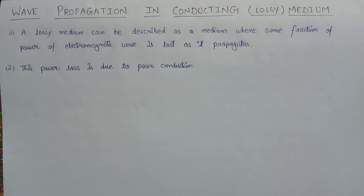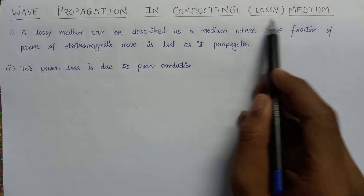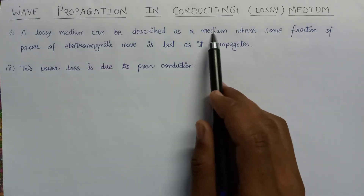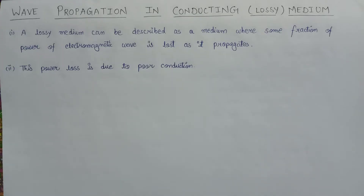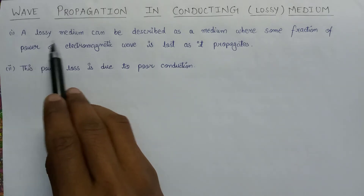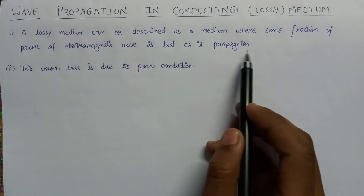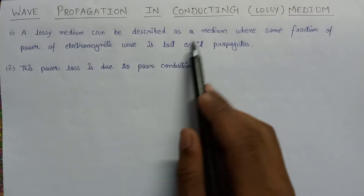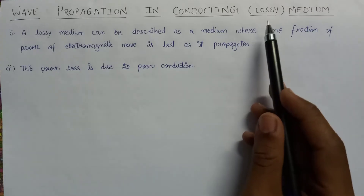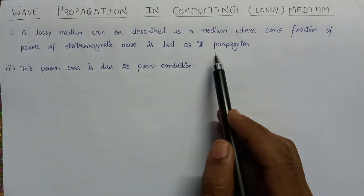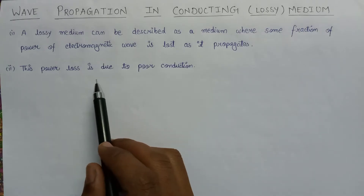Welcome all. In this lecture we are going to discuss wave propagation in conducting medium. The word conducting medium can also be called a lossy medium, because whenever an electromagnetic wave propagates in a conducting medium, there are a number of losses that occur during its propagation. A lossy medium is a medium where some fraction of the power of an electromagnetic wave is lost as it propagates. These losses are due to poor conduction.